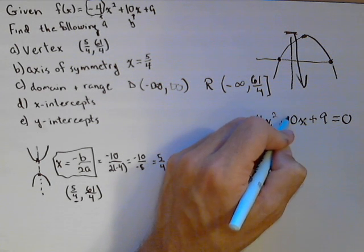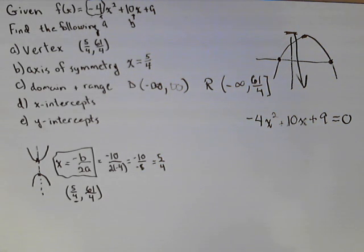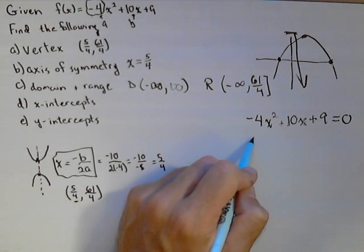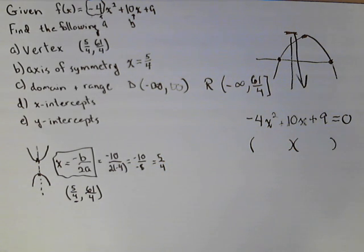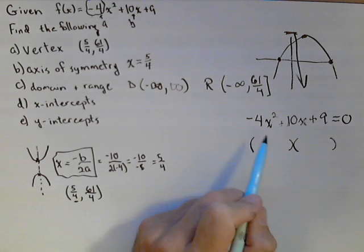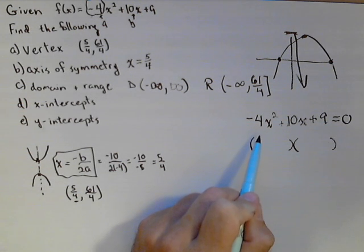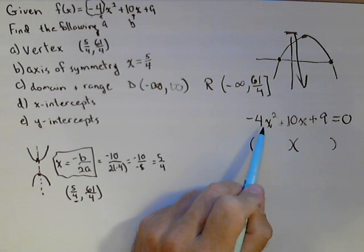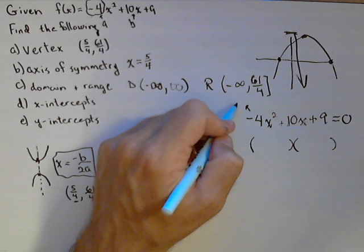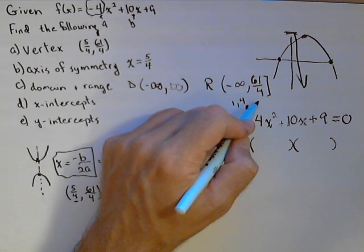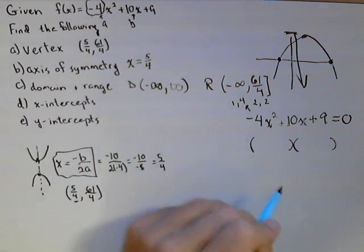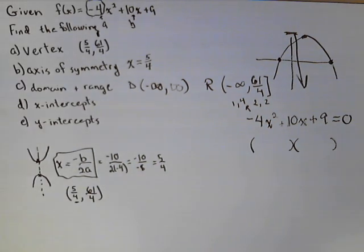Now we'll always try factoring first, but a fallback is always the quadratic formula. Let's see if we can get this thing to factor into two distinct factors. So we have different ways we can split this up. Negative 4x can be split into 1 and 4 or 2 and 2.